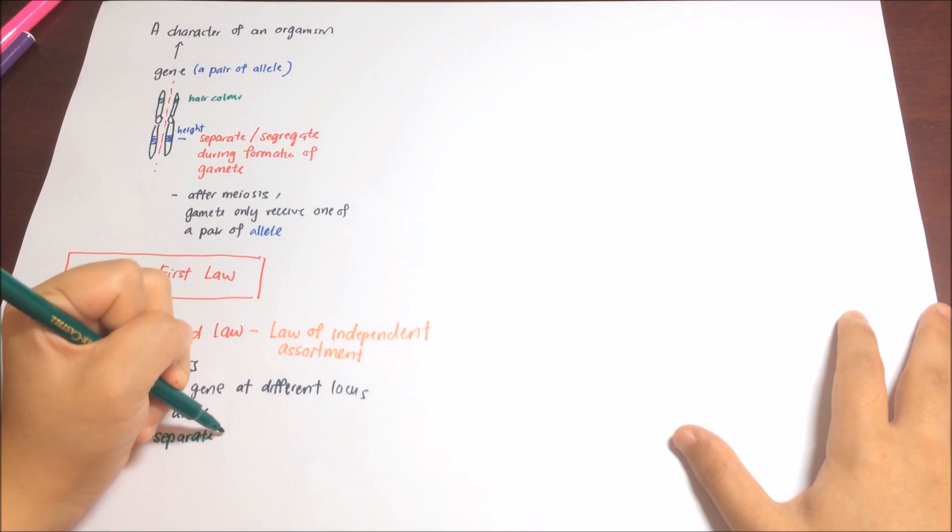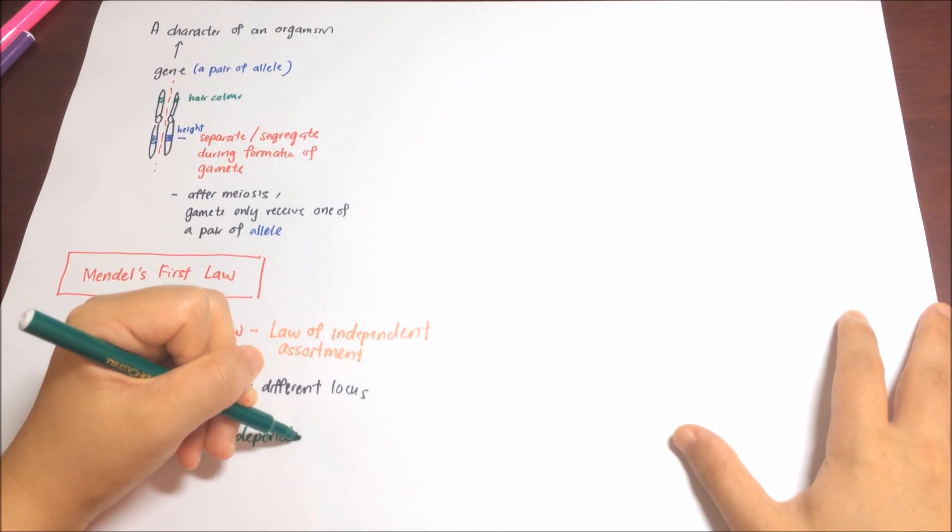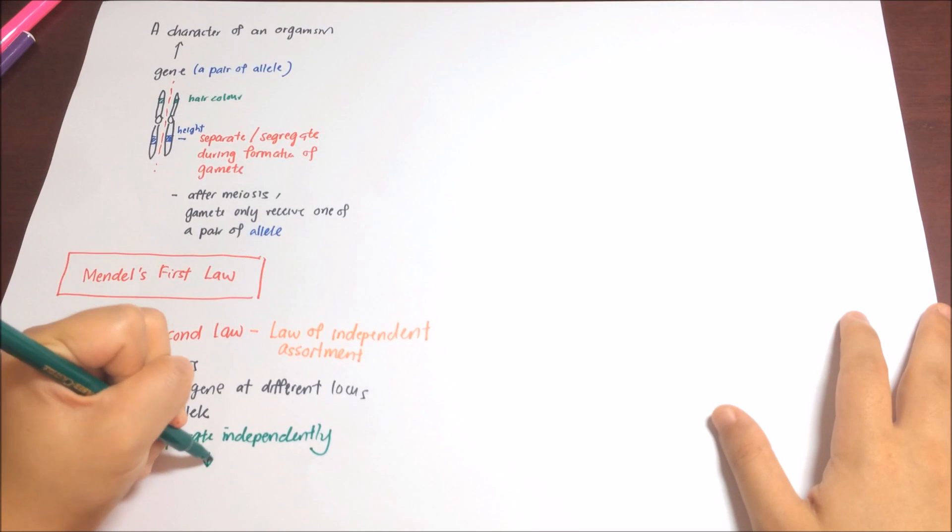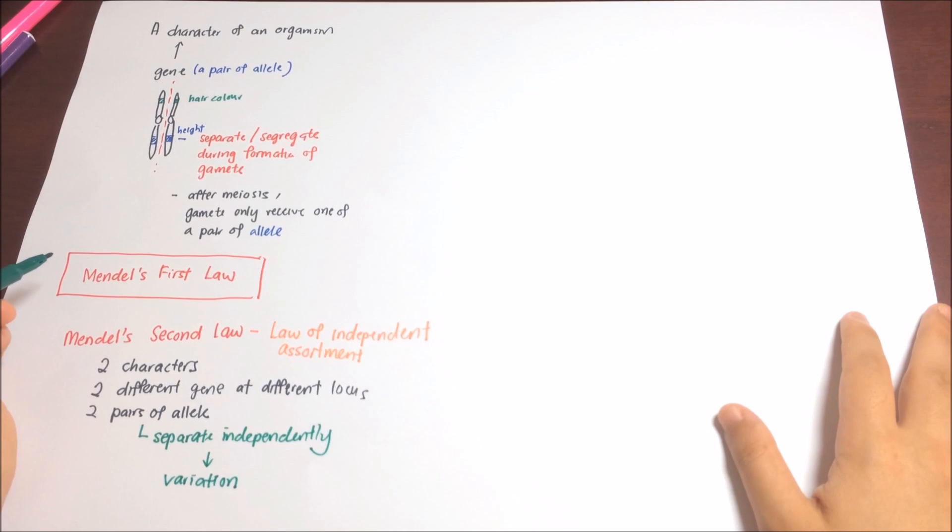Remember, alleles separate independently of each other during the formation of gamete. And this will result in variations among the offspring for the survival of species. This means that black hair color doesn't necessarily have to follow short characteristics.